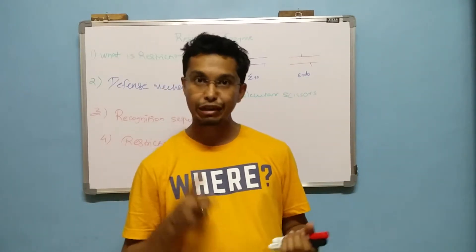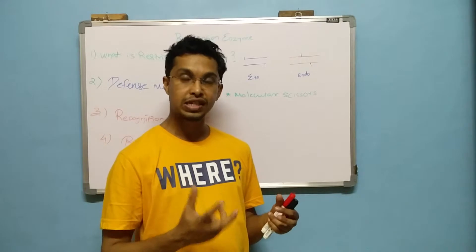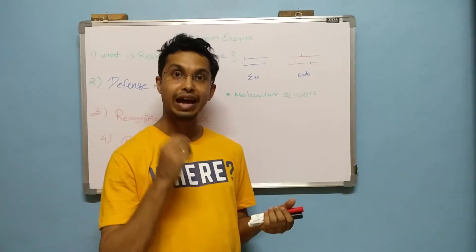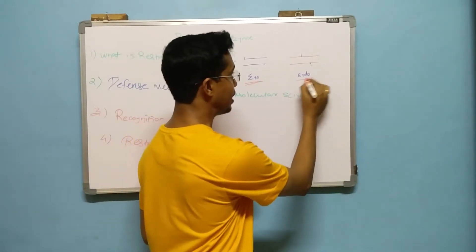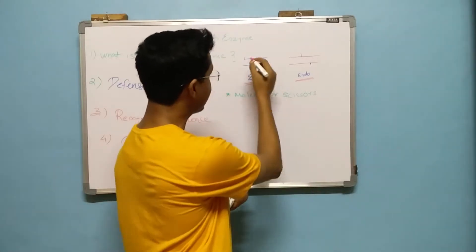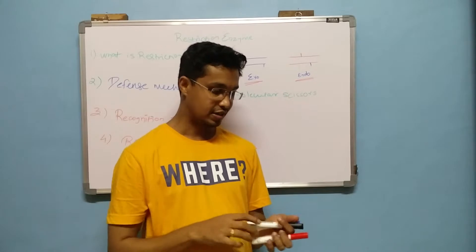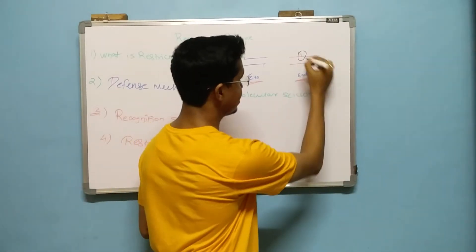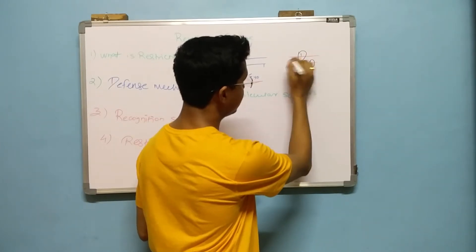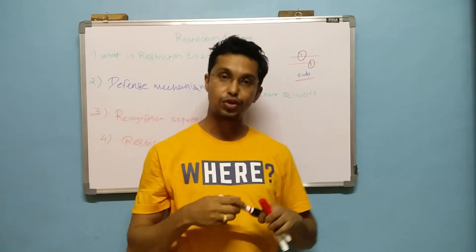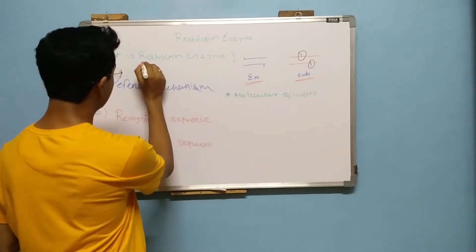Now depending on what kind of restriction enzyme we are using, there are two types basically. Mainly they are divided into: first is exonucleases and second is endonucleases. Exo means outside — they cut at the outside region, that's why they are called exonucleases. Endonucleases, as you can see I have already drawn over here, cut somewhere in between and not at the end. So that is the difference between exonucleases and endonucleases.